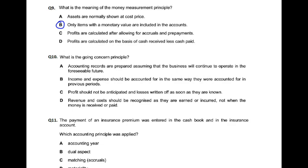If someone gets paid, the sales record is not made until cash comes in. Similarly for expenses — they are only recorded when cash is paid. This is cash accounting. Normally, small businesses may use it, but it is not allowed for big or medium-sized businesses.